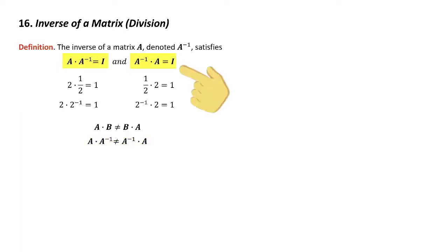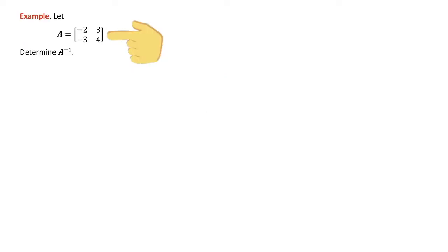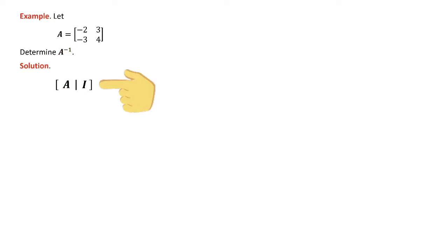Whether you multiply on the left or the right matters — it doesn't for real numbers, but real numbers are very special. So here's a 2×2 matrix, and I want to determine its inverse. It's basically going to be Gauss-Jordan all over again. We start with matrix A, and on the right-hand side instead of a vector we augment the matrix A with the identity — the matrix version of 1. Then we do Gauss-Jordan exactly the same as before, and it fits perfectly here.